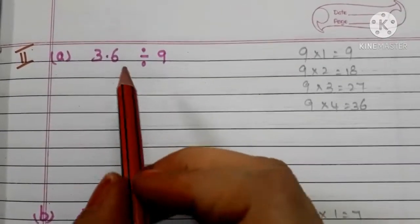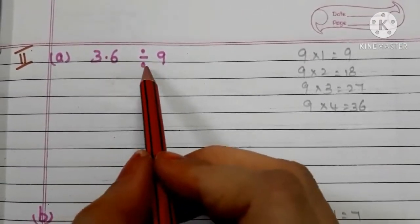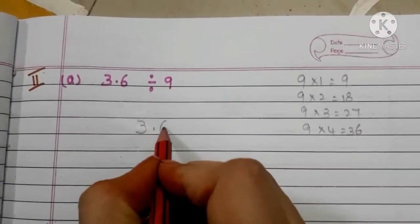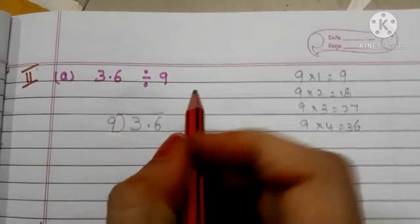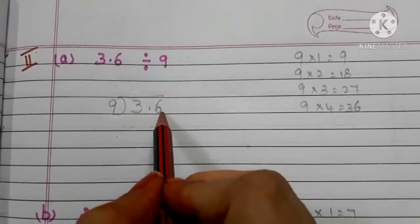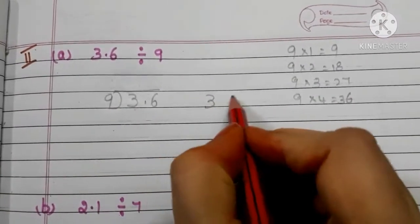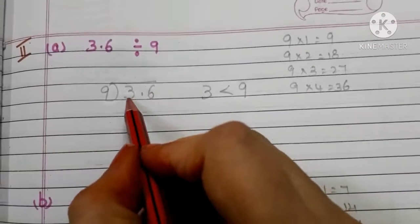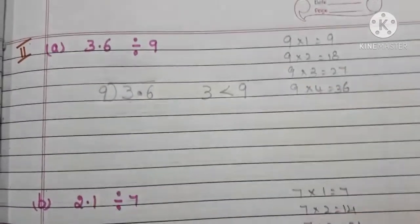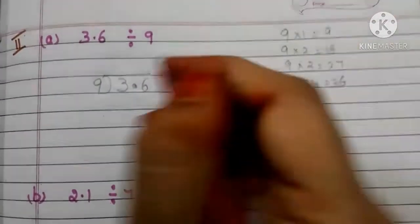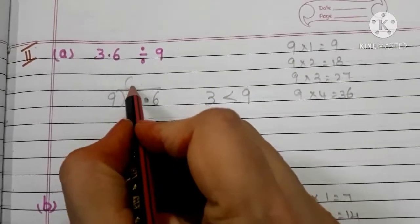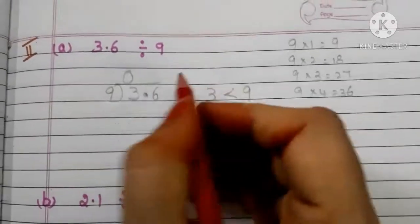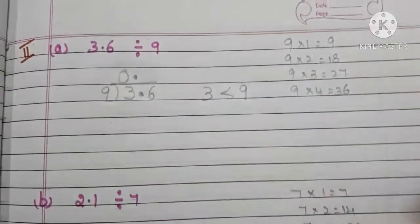Let's go to another example. Here we have 3.6 divided by 9. First, arrange like this: 3.6 divided by 9. In the dividend 3.6, the first number is 3, and 3 is less than the divisor 9. After 3, there is a decimal point. In these cases, we have to write 0 in the quotient, and since there is a decimal point after 3, we need to put the decimal point in the quotient as well.